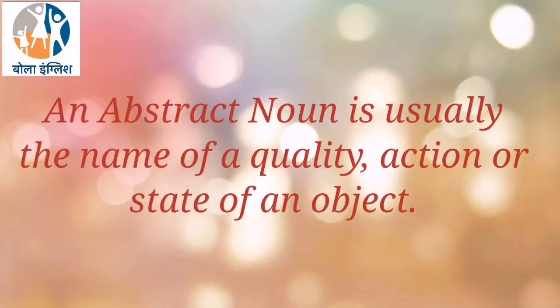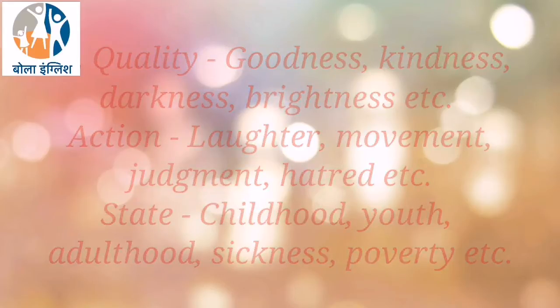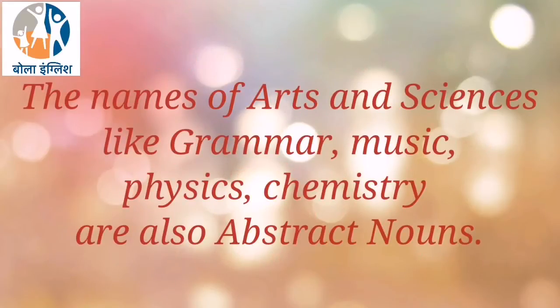An Abstract Noun is usually the name of a quality, action or state of an object. Names of quality: goodness, kindness, darkness, brightness, etc. Names of action: laughter, movement, judgment, hatred, etc. And names of state: childhood, youth, adulthood, sickness, poverty, etc. The names of Arts and Sciences like Grammar, Music, Physics, Chemistry are also Abstract Nouns.